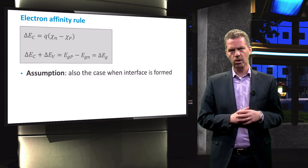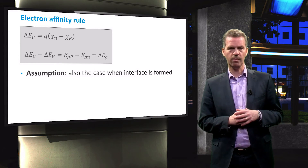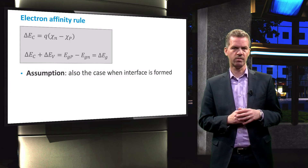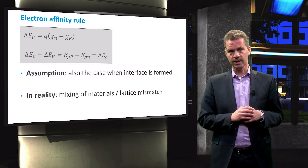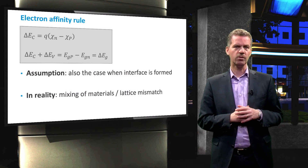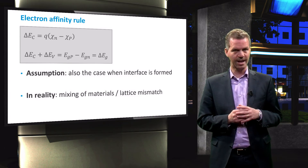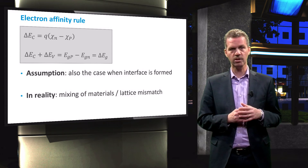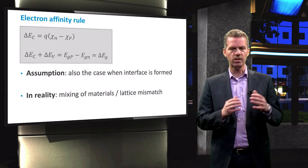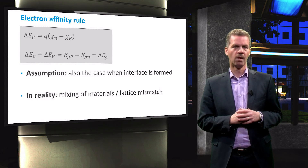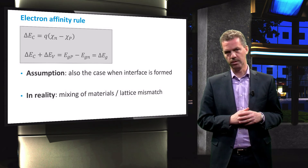We assume this rule holds when an interface is formed between two semiconductors with different band gaps. In reality, however, this is usually not the case, as mixing of the materials can occur at the interface, thereby changing the chemical composition in a narrow region around the interface, or the lattices of the materials can be mismatched, resulting in different properties. But these effects will not be taken into account for the moment.